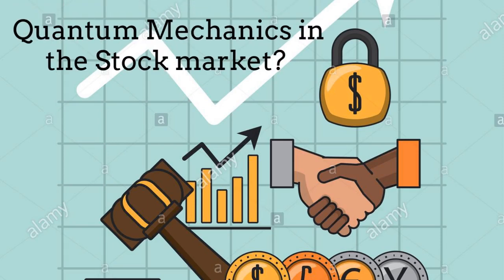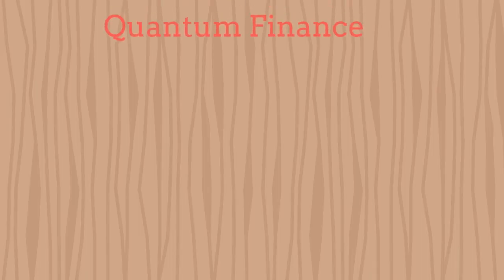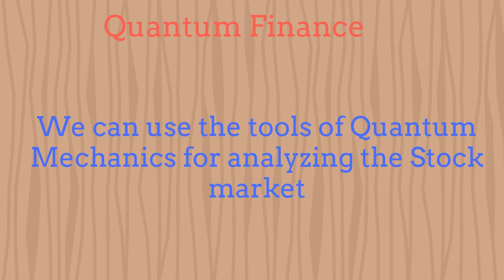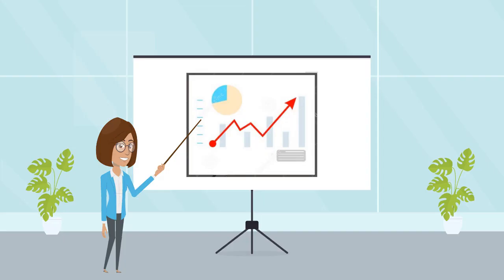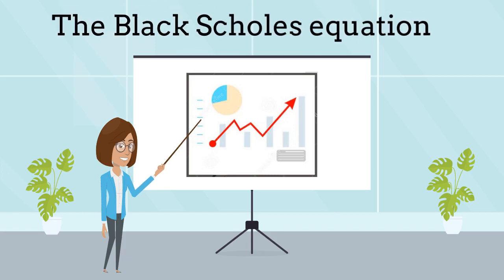Did you know that we can use quantum mechanical tools for analyzing the stock market? The branch of physics used for analyzing financial problems is called quantum finance. It has several applications, including the analysis of the stock market. In this chapter we will focus on the Black-Scholes equation.